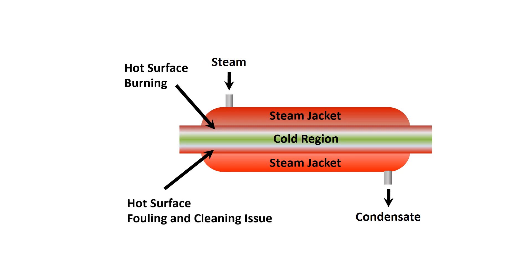Fouling could cause two more issues: low heat transfer due to fouling, and difficulty in cleaning at the end of the process. In contrast, there is low risk of fouling or burning in Ohmic heating since no heating surface is used — that is, internal heating.